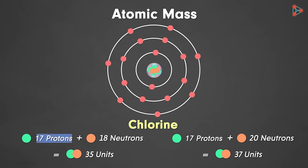The atoms having 17 protons and 18 neutrons have an atomic mass as 35 units. On the other hand, chlorine atoms with 17 protons and 20 neutrons have an atomic mass of 37 units.